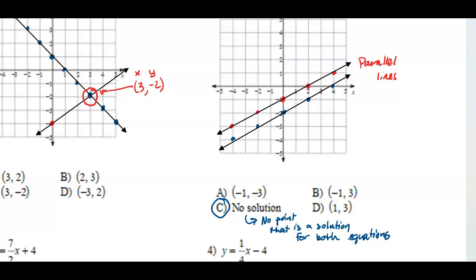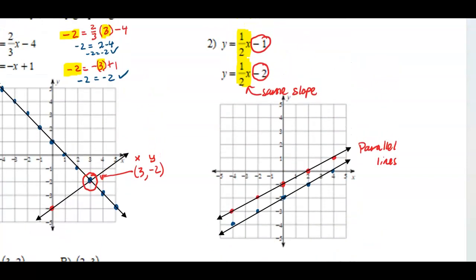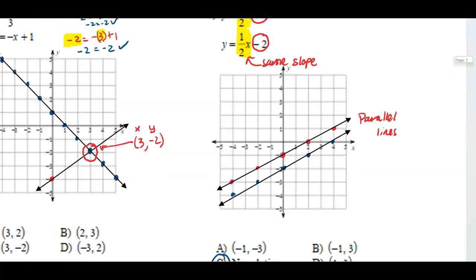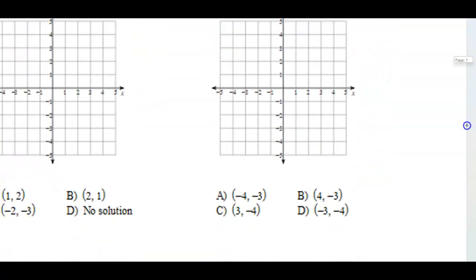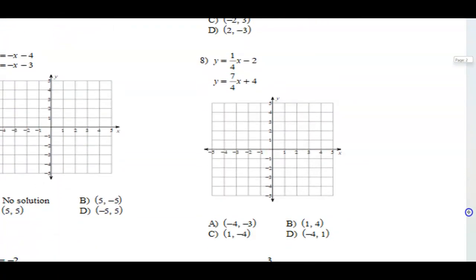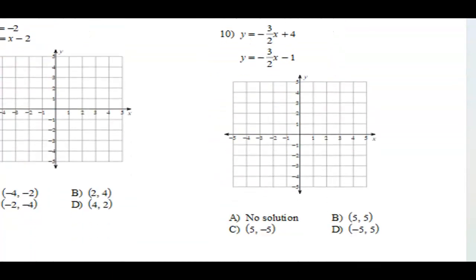So today only, you're going to have either one solution where they do meet each other, or no solution where they don't meet each other. Now you have the rest 3 through 10 to go ahead and graph. If the lines intersect, you have that solution. If the lines do not intersect, they will have no solution.